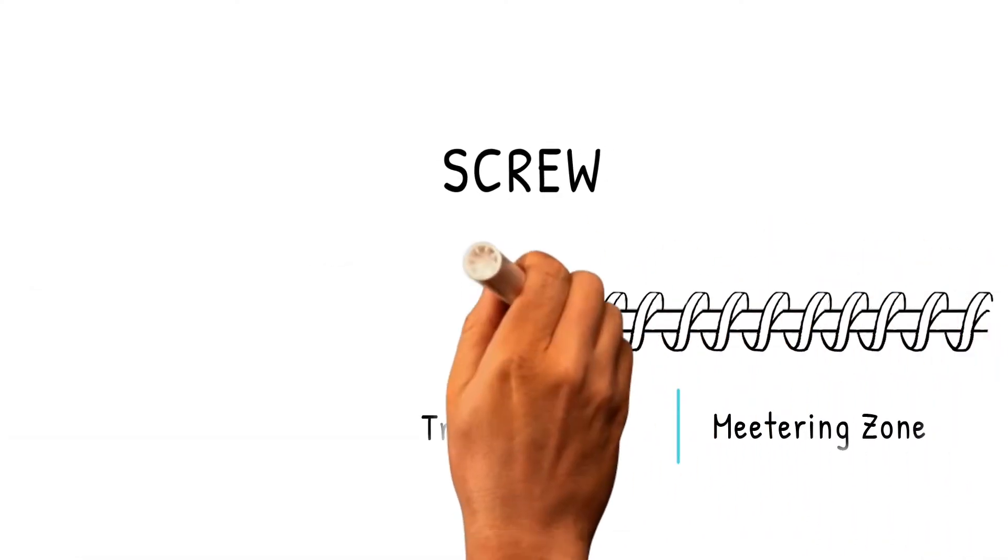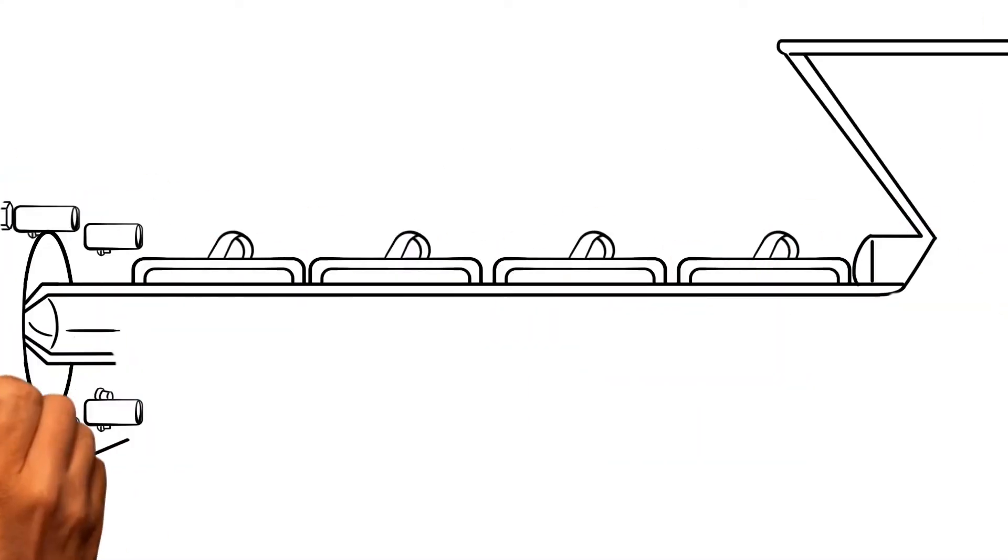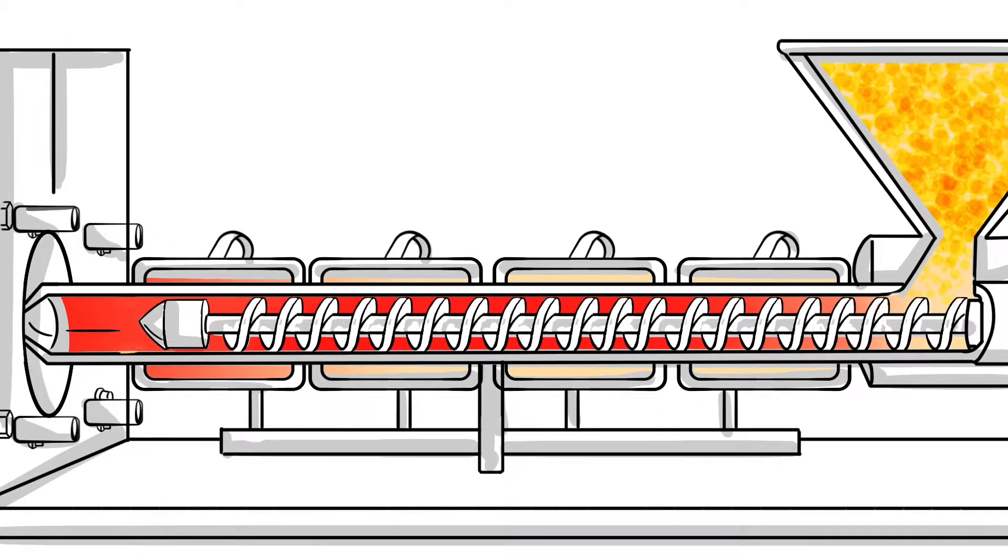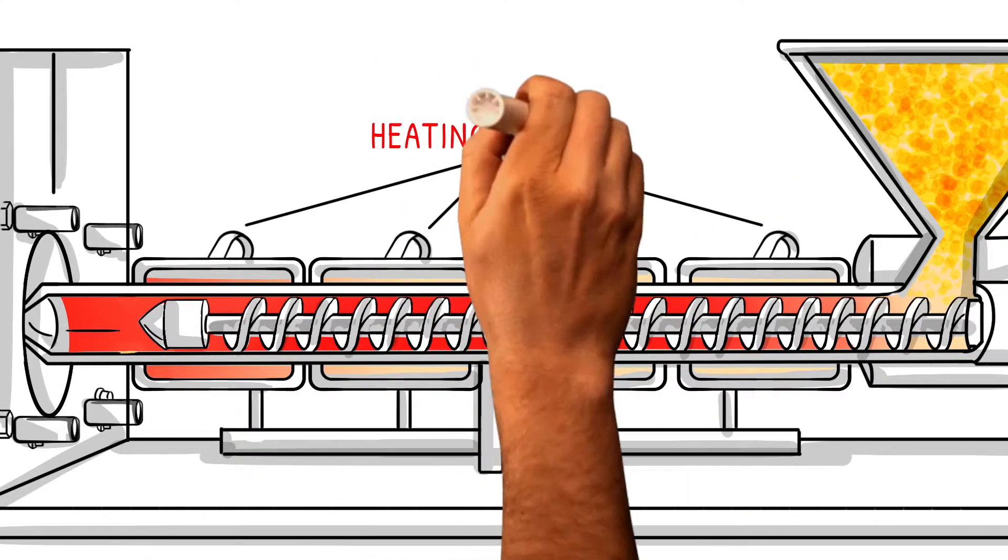The screw has three zones. As the material moves closer to the nozzle end, the material starts to liquify. The material is melted through the combination of compression inside the barrel via friction and by the heating elements that surround the barrel.